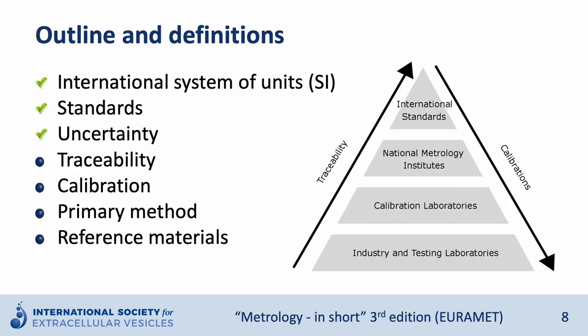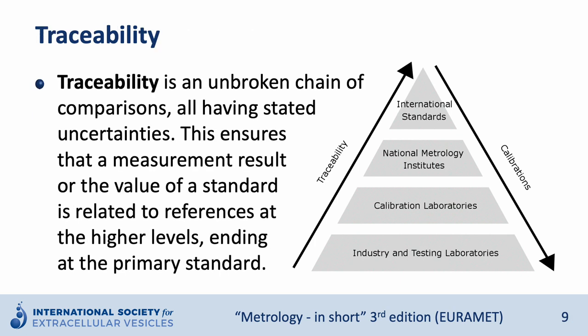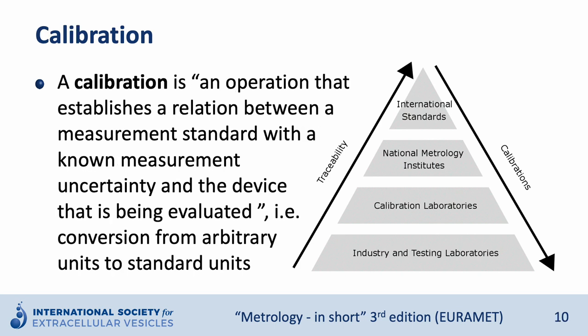In the following I will give the definitions of traceability and calibration which connect laboratories at different levels. Traceability is an unbroken chain of comparisons all having stated uncertainties. This ensures that the measurement result or the value of a standard is related to references at the higher levels, ending at the primary standard. Calibration is defined as an operation that establishes a relation between a measurement standard with a known measurement uncertainty and a device that is being evaluated — for example, conversion from arbitrary units to standard units, which is very important in the EV field.